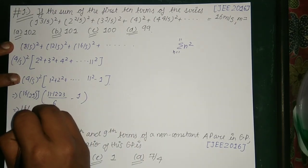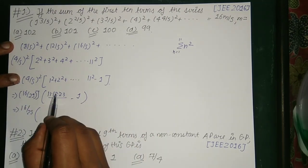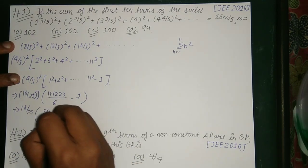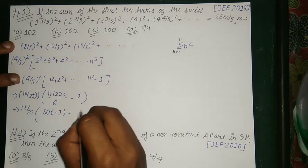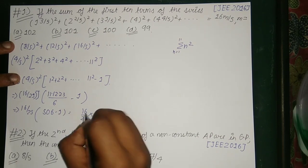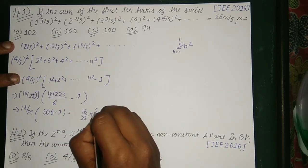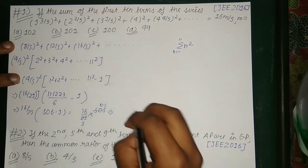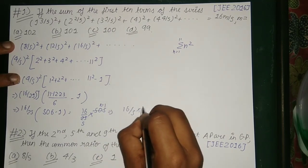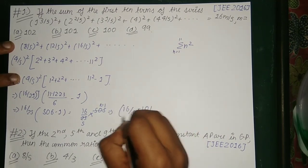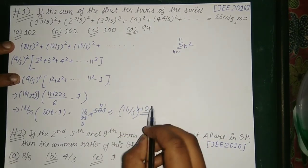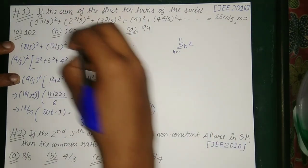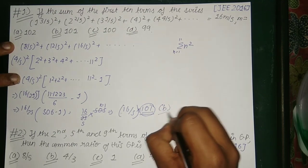So the answer comes out to be 22 × 23 = 506, minus 1, that is equal to (16/25) × 505. Canceling the terms we get (16/5) × 101. This can be written as (16/5) × m, so the value of m comes out to be 101, which is option B.